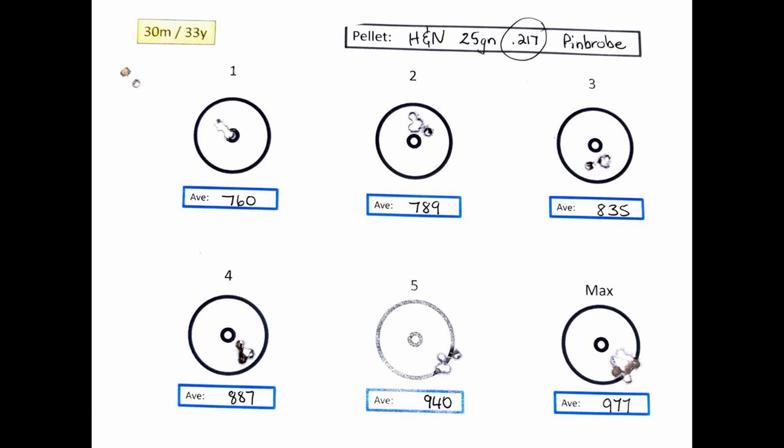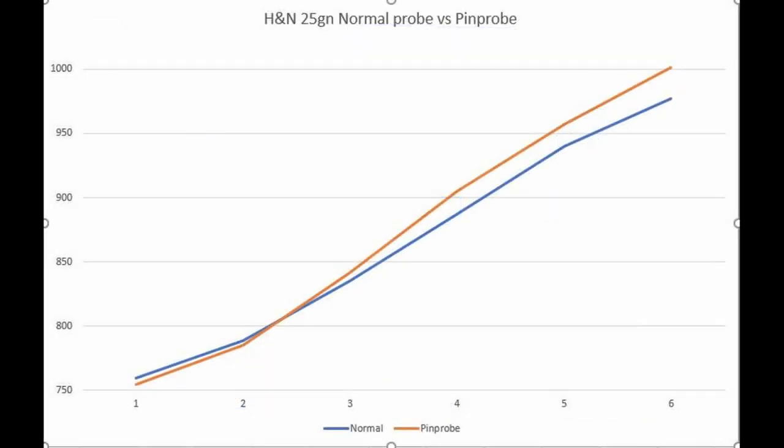Interesting to see in the speed check as well that the H&Ns didn't have that big a difference between the pin probe and the normal probe. But here from setting 4 onwards it opened up with a 25 feet per second spread at maximum power. This is more in line with my expectations of what the pin probe should do.